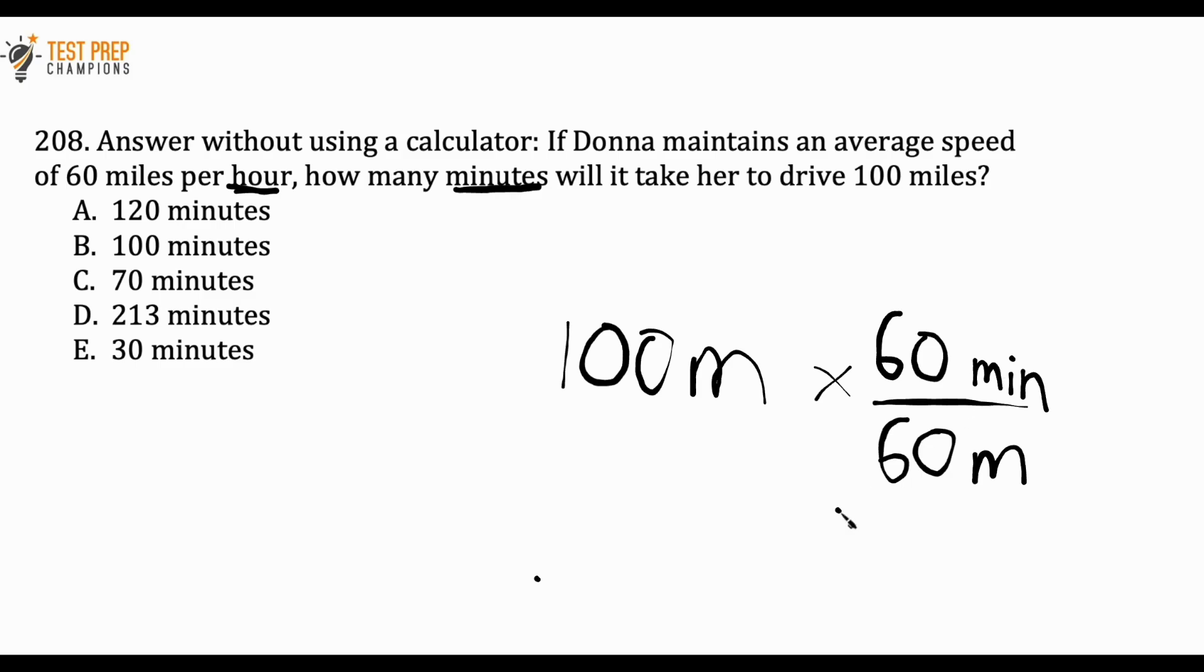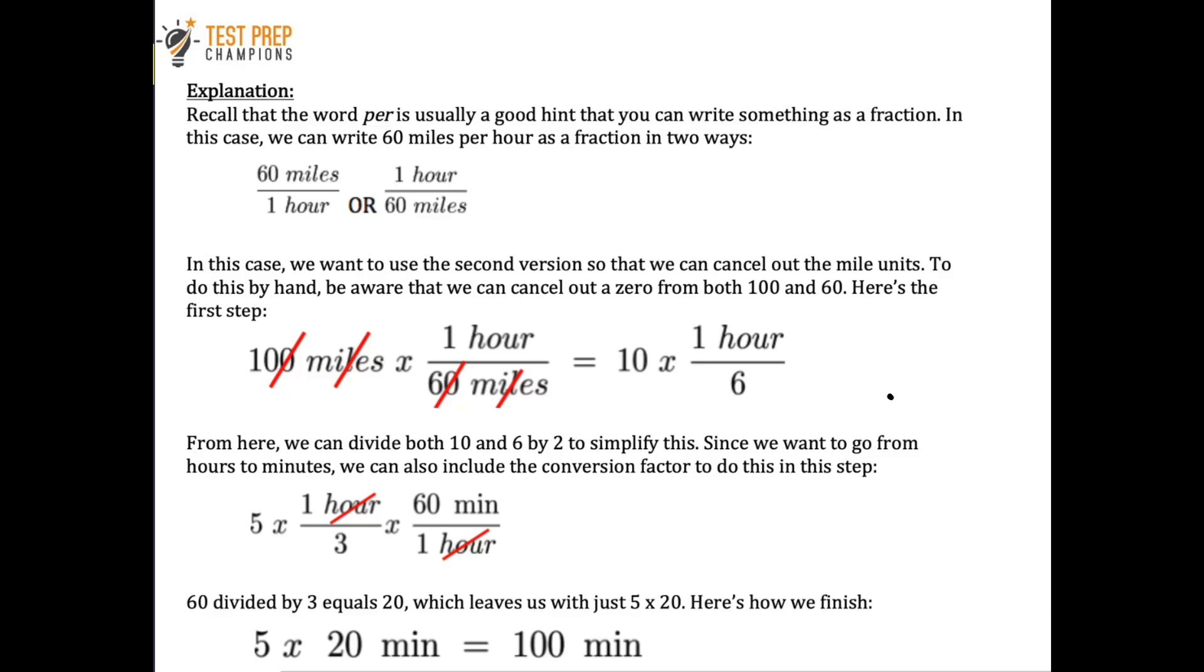Now we just have to do a little bit of math. What makes it nice if you set the problem up this way is that the miles will cancel out, which is what we want. Since you've got 60 divided by 60, that's also going to cancel out. So we're just left with 100 minutes. That's a really quick way to get the answer to this question, but you would have had to put in 60 minutes here instead of one hour.